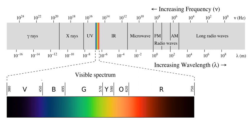In physics, electromagnetic radiation refers to the waves of the electromagnetic field, propagating through space, carrying electromagnetic radiant energy. It includes radio waves, microwaves, infrared, visible light, ultraviolet, X-rays, and gamma rays.